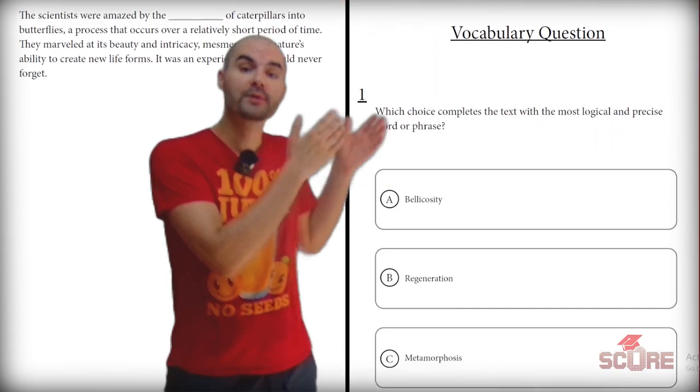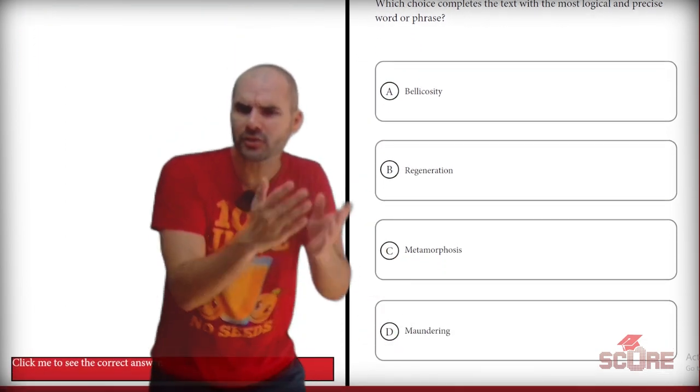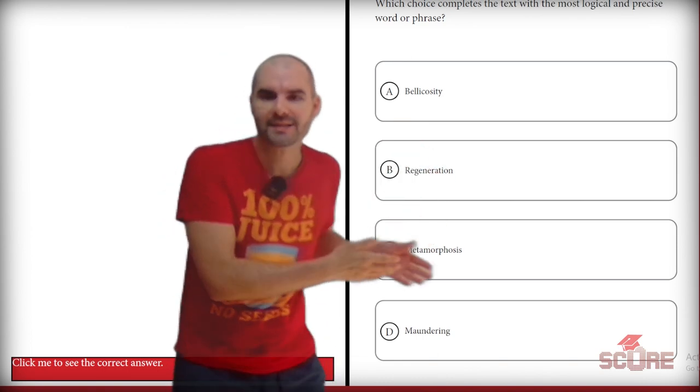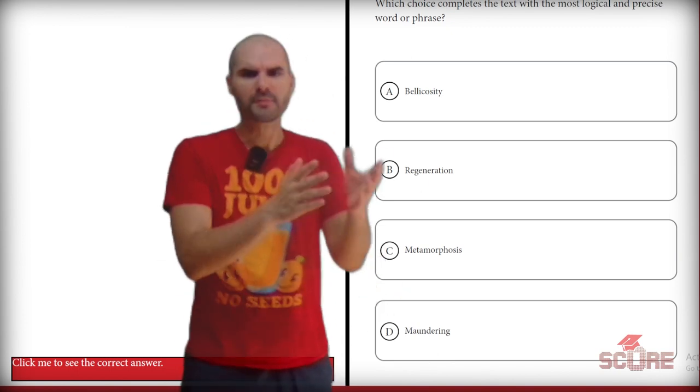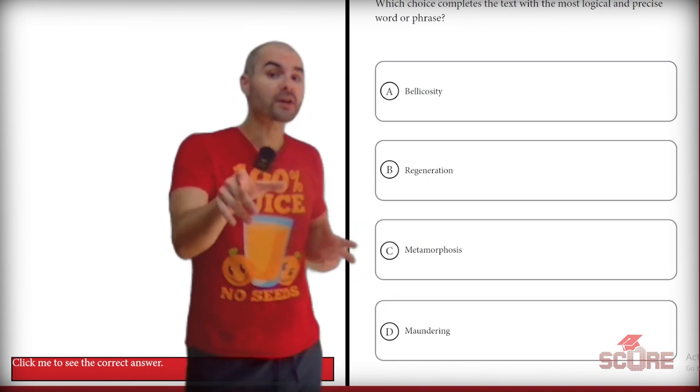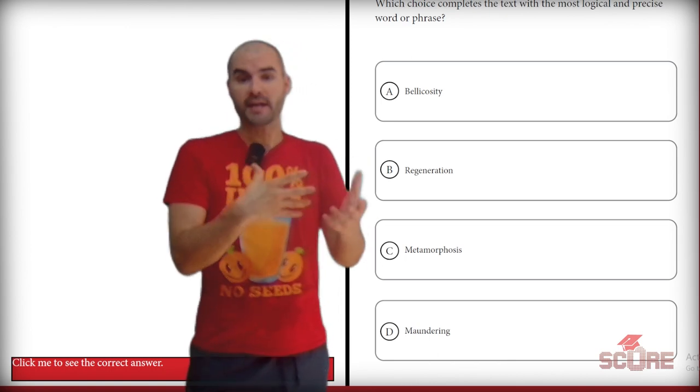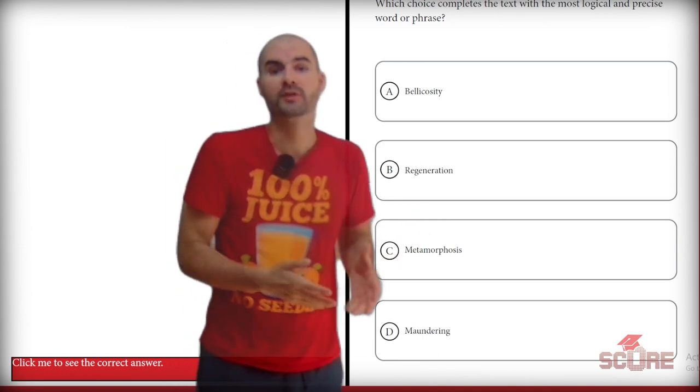So I need to look for a word that could represent a process. The options we've got are bellicosity, regeneration, metamorphosis, and maundering. I don't know what that word means, but I don't think it's going to matter because I can already rule out things like bellicosity because it's not a process. Regeneration may be a process, but I'm not sure if it applies here. Metamorphosis seems like a really good answer because I know that metamorphosis is something that caterpillars do, and I also know that morph implies a process. So I'm already leaning towards that answer.